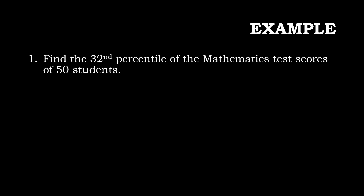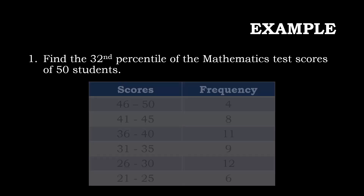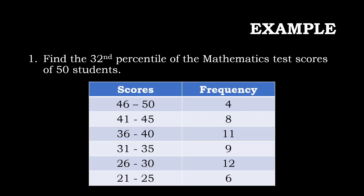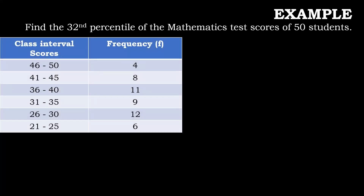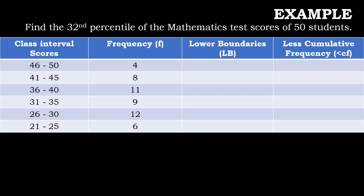Let us have an example. Find the 32nd percentile of the mathematics test scores of 50 students given the table. The table shows the scores and the frequency. There are 4 students who got scores from 46 to 50, 8 students from 41 to 45, 11 from 36 to 40, 9 from 31 to 35, 12 from 26 to 30, and 6 from 21 to 25. To solve for the 32nd percentile, let us first make the frequency distribution table with the lower boundaries and the less cumulative frequencies.